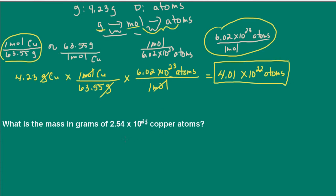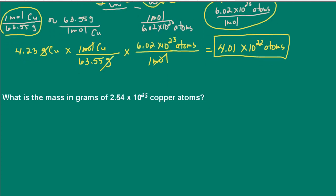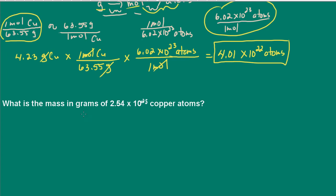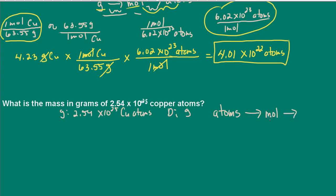What is the mass in grams of 2.54 times 10 to the 25 copper atoms? Now we're given the number of copper atoms and asked for the mass in grams. We have to go from atoms to grams. I can't go from atoms to grams directly, but I have an equivalence for moles and atoms: 1 mole equals 6.02 times 10 to the 23 atoms. So I can go from atoms to moles, and then it's easy to convert between moles and grams. I'll need two conversion factors.